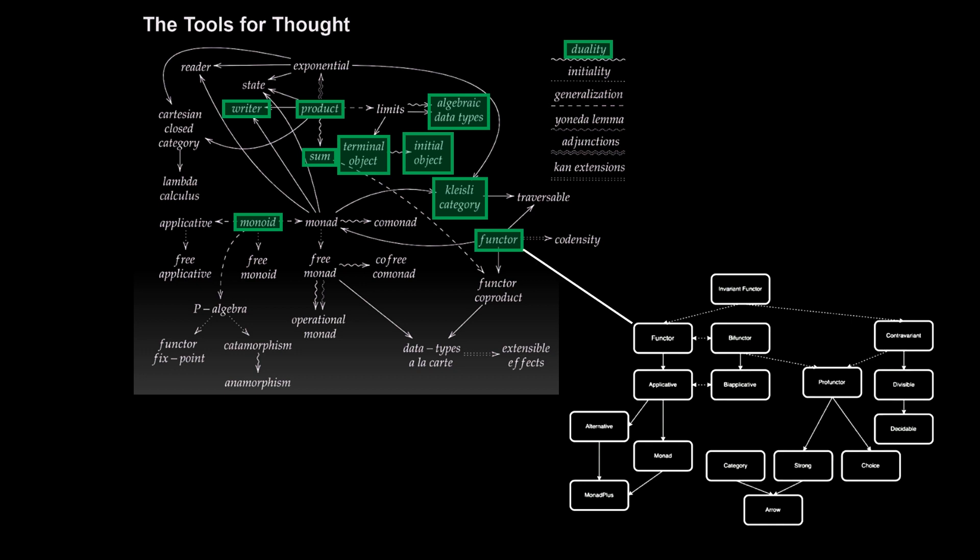And if we draw an arrow from functor between the two diagrams, we can highlight them as so. And this is what we're going to be covering in today's chapter.